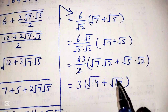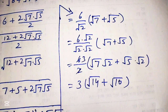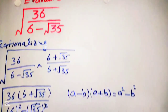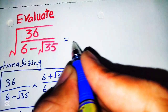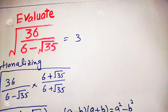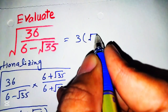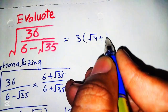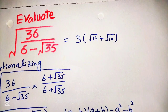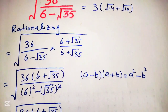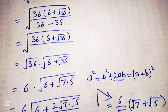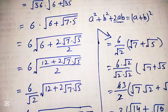So this is the final answer and simplified form of our given equation. We can write it as 3 times square root of 14 plus square root of 10. Thank you so much for watching this video. Please subscribe to my channel for more interesting videos. If you have any other approach to this question, please share with us in the comment section. Thank you.